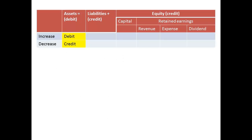Here is how our system works. The accounting equation tells us that assets are equal to liabilities plus equity. Asset accounts usually have a debit balance. To increase an asset account we debit the account. To decrease an asset account we credit the account.